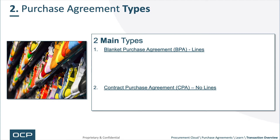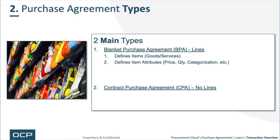There are two main purchase agreement types, which are characteristically different. Agreements that have lines and agreements that do not have lines. A blanket purchase agreement, or BPA, has lines. Those lines define items, goods, or services, and the attributes for those items such as price and categorization. They define any discounts for each of those goods or services at the line level, define a start date and potentially an end date, and they link those lines to purchase orders and requisitions.